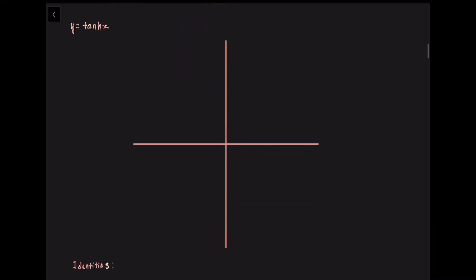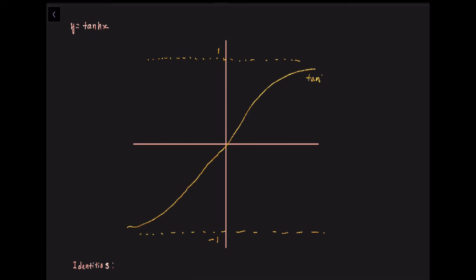For the tanh(x) graph, the graph lies between the asymptotes y = 1 and y = −1, and the graph looks like this.